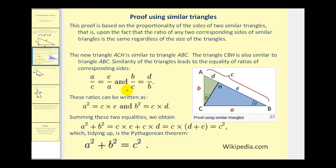So we're going to set up two proportions using these similar right triangles. First we're going to compare the ratio of A to C, which is the longer leg to the hypotenuse of the largest right triangle, and that's equal to the ratio of E to A, which is the longer leg of the blue right triangle to the hypotenuse of the blue right triangle.